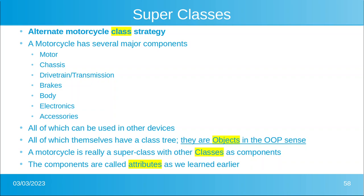Let's look at a different strategy for categorizing vehicles. A motorcycle has several major components: a motor, chassis, drivetrain, transmission, brakes, body, electronics, and accessories. Interestingly, many of these can be used in other devices, and each of those things — like the motor — has its own class tree. They are objects in the sense of object-oriented programming. So a motorcycle is really a class that incorporates a whole bunch of other classes, and by incorporating them, they become attributes of the motorcycle class.